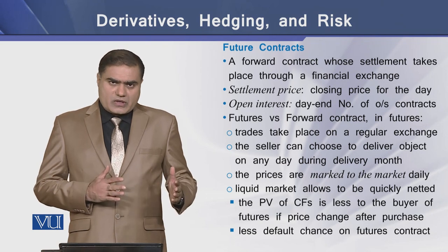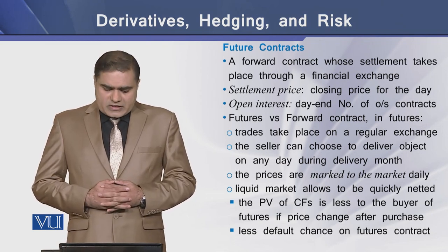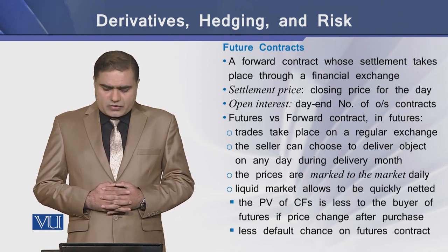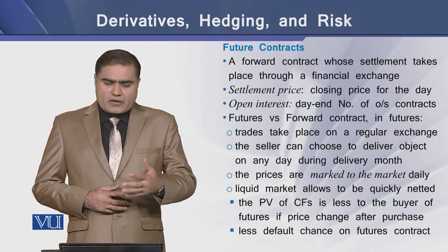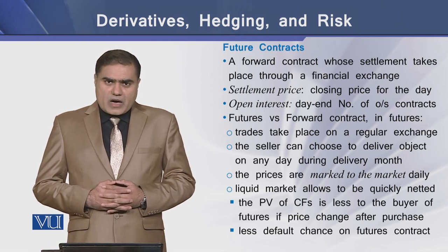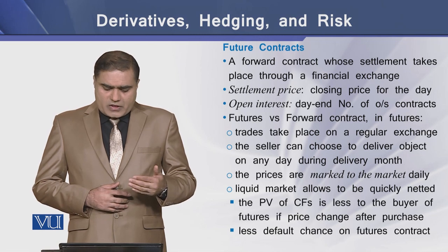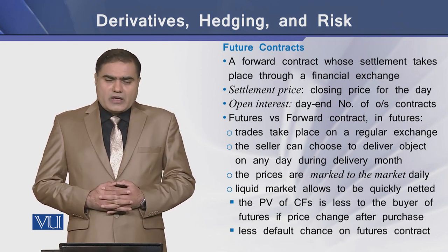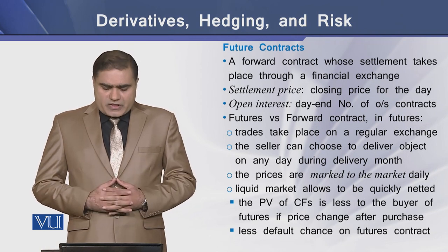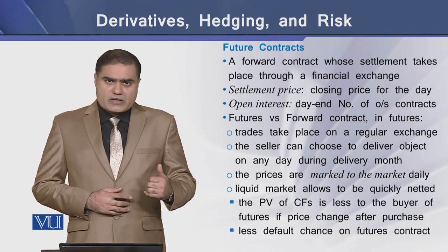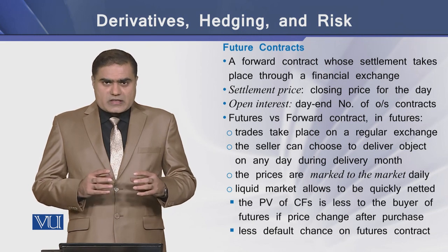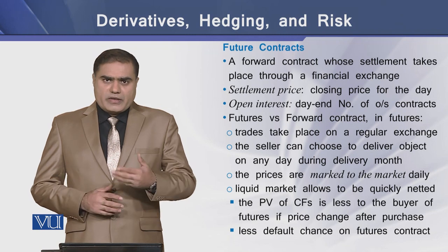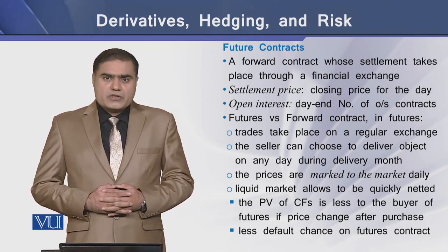There are some differences between futures and forwards. In futures, trades take place on a regular and recognized floor or exchange. The seller can choose to deliver the object on any date during the month of delivery. In futures, prices are daily marked to market, meaning the liquid market allows positions to be netted off very quickly by the parties involved. In this way, the present value of cash flows to the buyer is reduced. If prices increase after purchase, due to the element of liquidity there are fewer chances of default on future contracts.